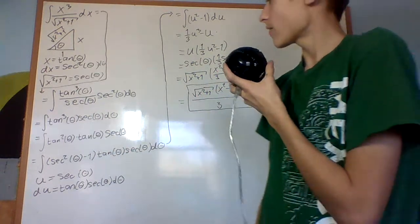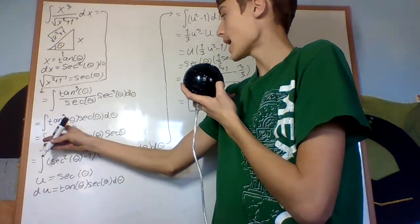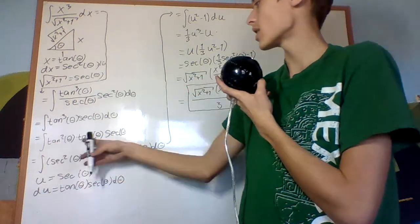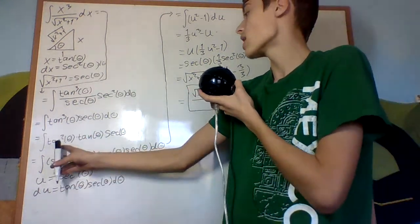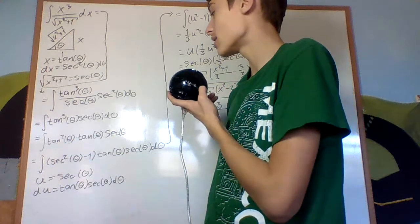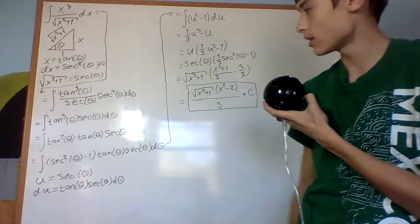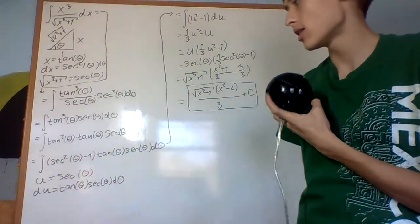From that, I split up tangent cubed theta into tangent squared theta times tangent theta, and then I use the identity that tangent squared theta equals secant squared theta minus 1, and I plug that in right there.